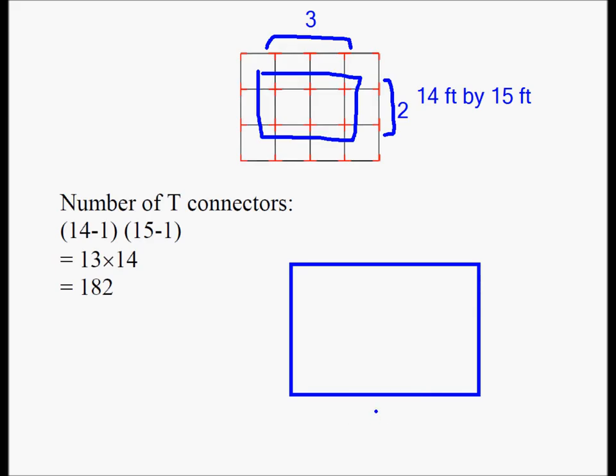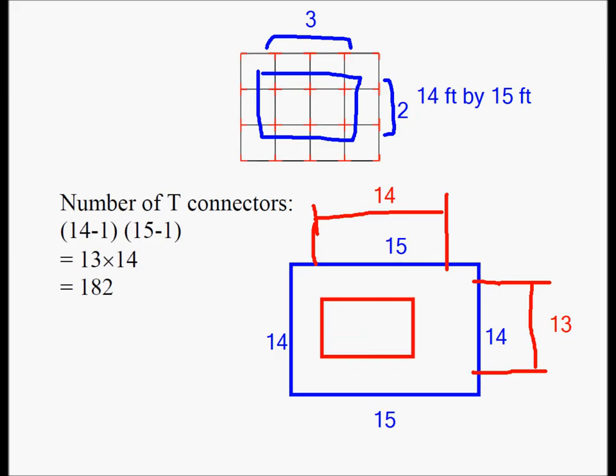So if it was 14, let's draw one here. Let's say I have a 14 foot by 15 foot lattice. Let's make this 15. And this is 14. Now, I'm going to change the color to red. How many T connectors would you need here? You would need 13 T connectors. How many T connectors would you need here? You're going to need 14 T connectors, which we did on the previous slide.